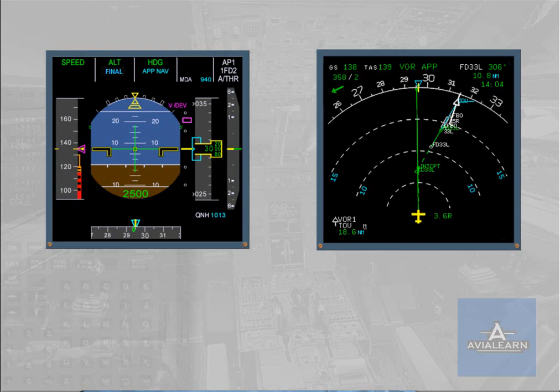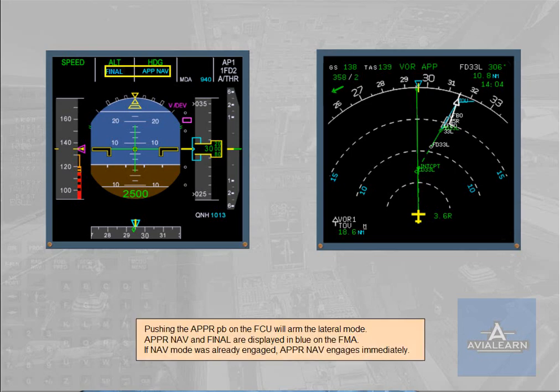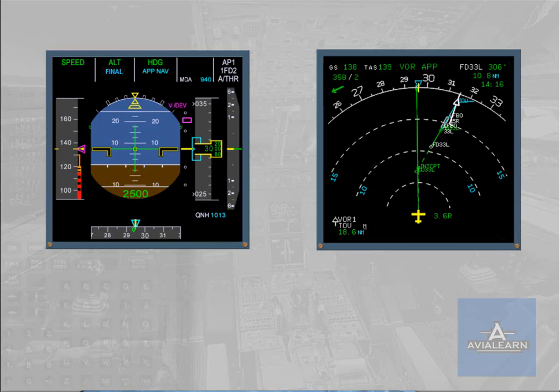Pushing the approach push button on the FCU will arm the lateral mode. Approach navigation and final are displayed in blue on the FMA. If navigation mode was already engaged, approach navigation engages immediately. If the interception is completed using heading or track modes, the track line must intercept the active leg, and approach navigation will engage when the intercept conditions are met. Do not forget to clear all remaining waypoints which do not belong to the approach.